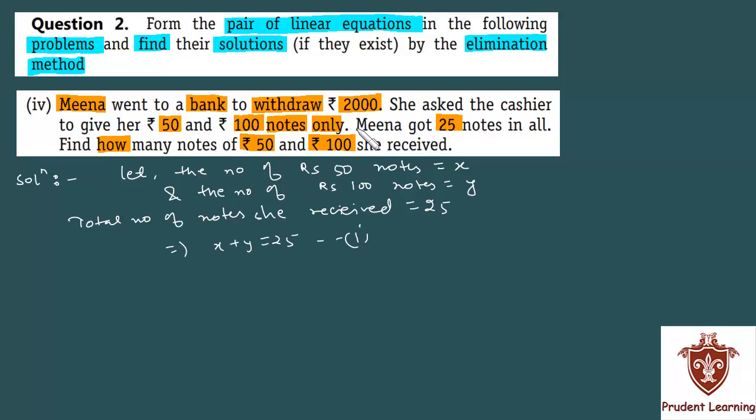is given: the total amount she withdrew is 2,000. We are given that total amount withdrew by Meena is 2,000 rupees. This means 50 times x